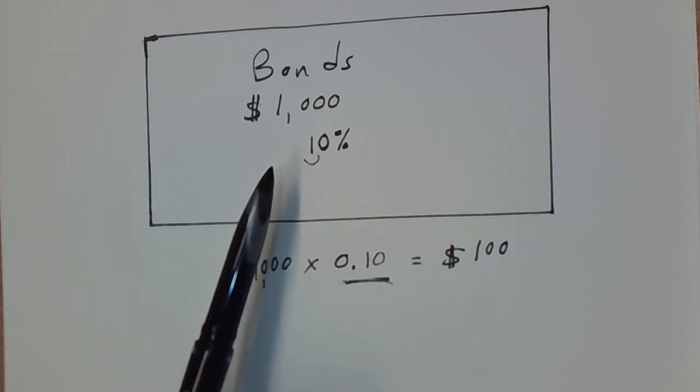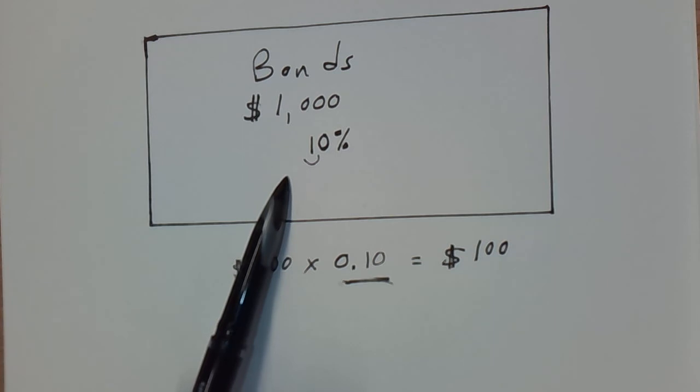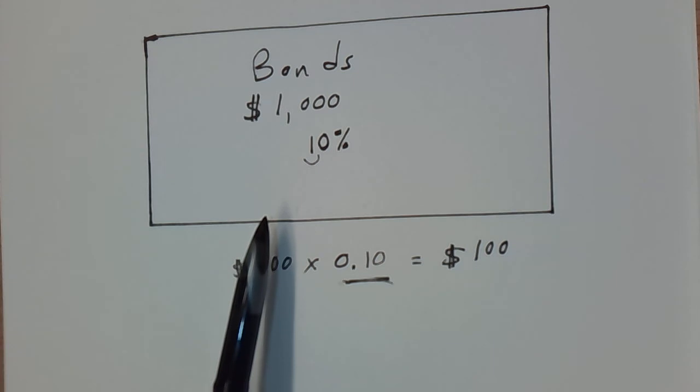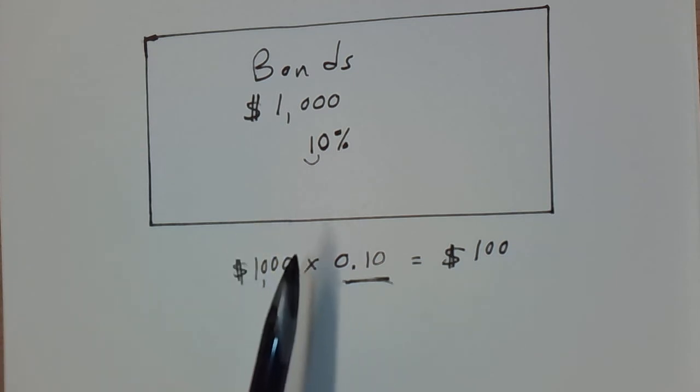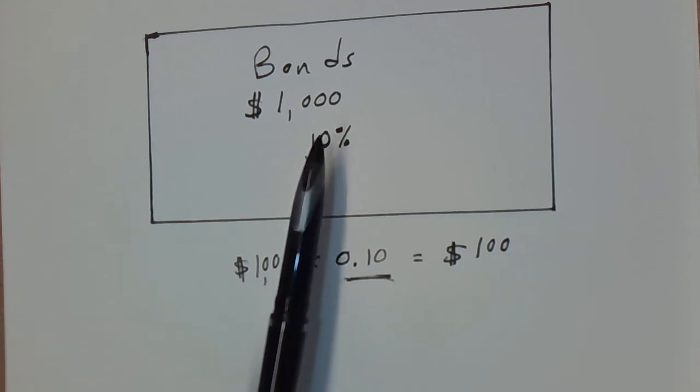Because once this money is invested into the bond, the person who invested in it owns this bond. And as I said, sometimes it's a certificate, sometimes it's just electronically recorded. That investor, in most cases, can sell that bond on the open market. And maybe they make a profit, maybe they take a loss, depending on how much they can sell it for.